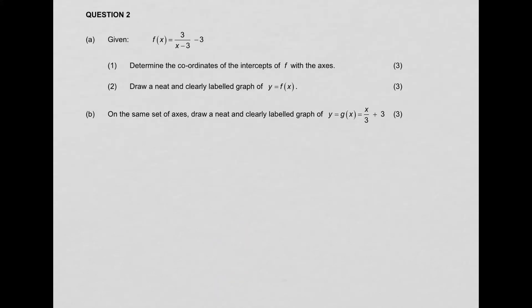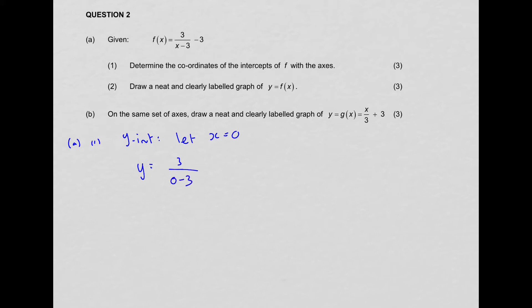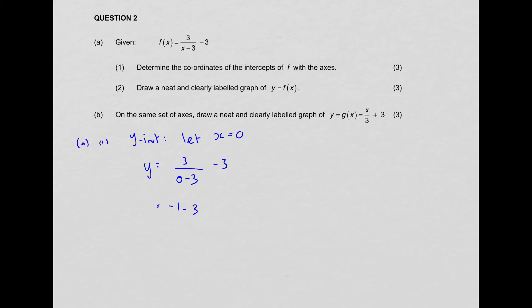Question 2A. You're given that f(x) equals 3 over (x minus 3) minus 3. That's a hyperbola — we know that because there's a variable in the denominator. Question 1 of A tells us to determine the coordinates of the intercepts of f with the axes. Let's start with the Y-intercept. For the Y-intercept, let X equal 0. So Y equals 3 over (0 minus 3) minus 3, which gives us negative 1 minus 3, equals negative 4.